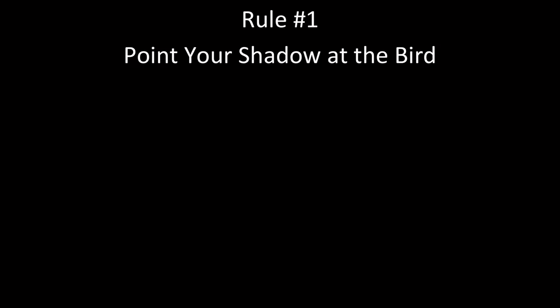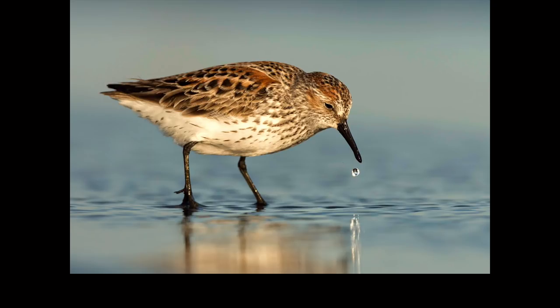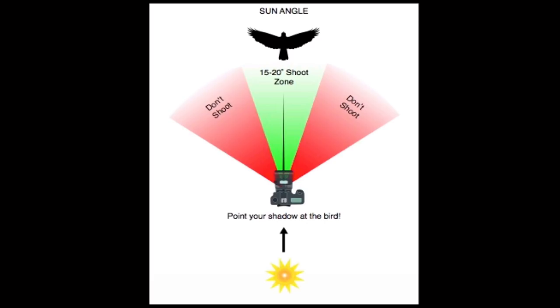Rule number one is point your shadow at the bird, and generally this is a great idea. If you point your shadow at the bird, the sun is behind you, that means the bird is evenly lit up, there's no harsh shadows, and the bird's going to look really good. Here's an illustration — the rule people say is don't shoot if it's more than 15 to 20 degrees off the shooting zone, because you're going to start getting shadows in.